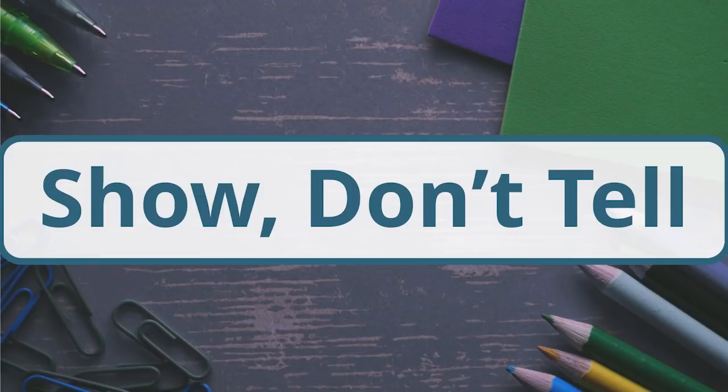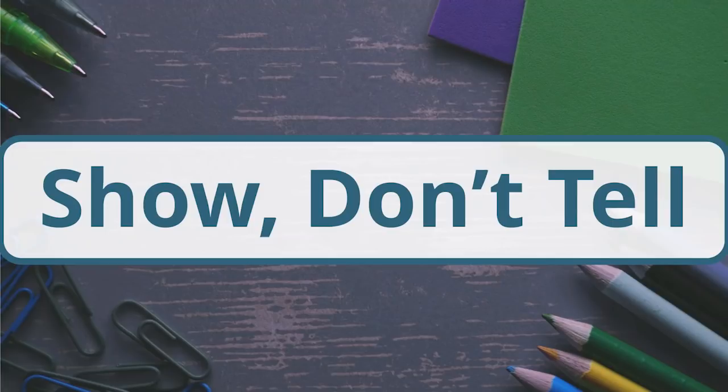ProWritingAid tries to help you find instances of telling. We look for words like 'knew,' 'felt,' and 'saw,' but also for emotions. If you've said 'he was happy,' we'll flag that as a potential telling rather than showing. Think about the sentence 'Bill knew Jason was lying' — you don't want to tell the reader that; you want to show them by describing how Jason knew he was lying. What was Jason doing that gave him away to Bill? Show Jason stammering and avoiding eye contact. Show Bill watching him carefully. ProWritingAid's overused words report highlights where you might be telling rather than showing, so you can find better ways to phrase the scene.